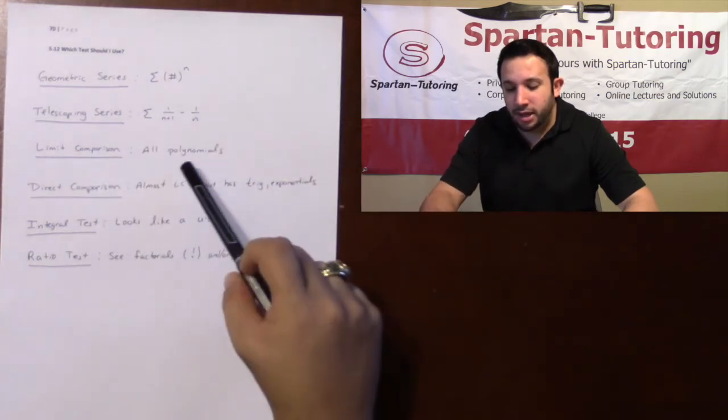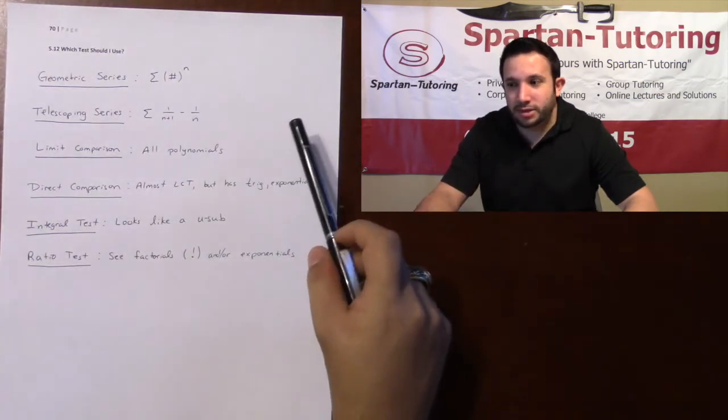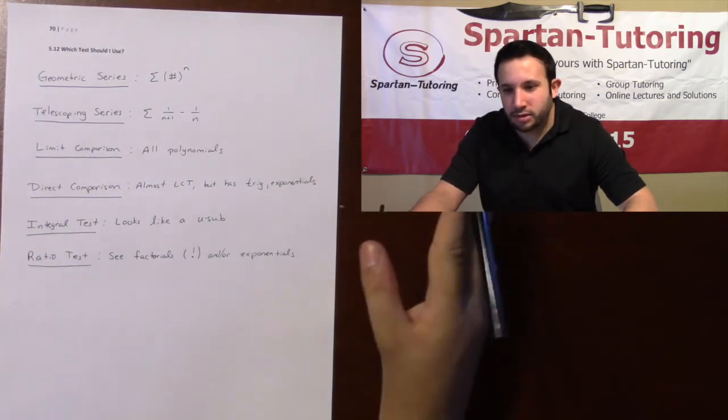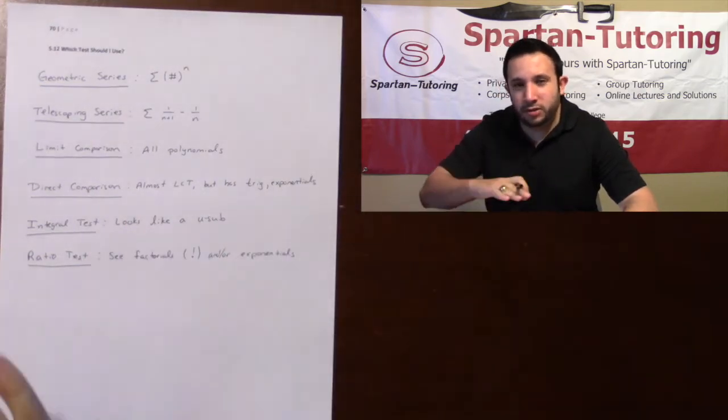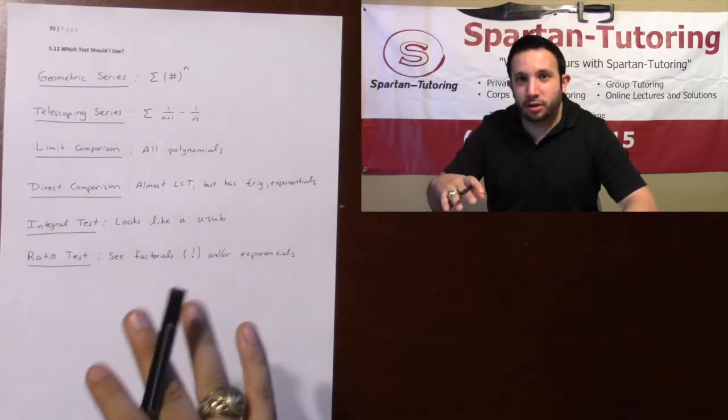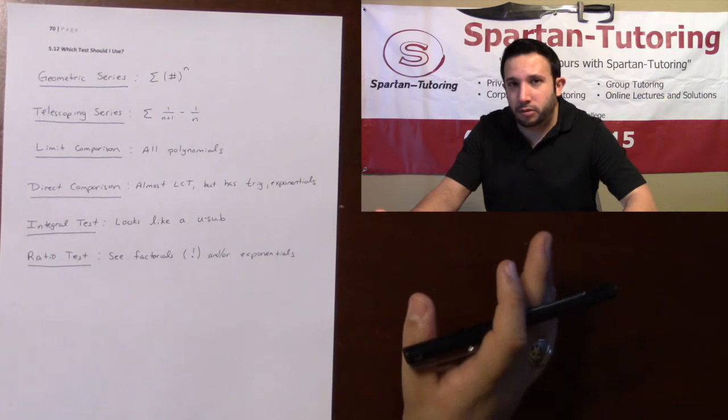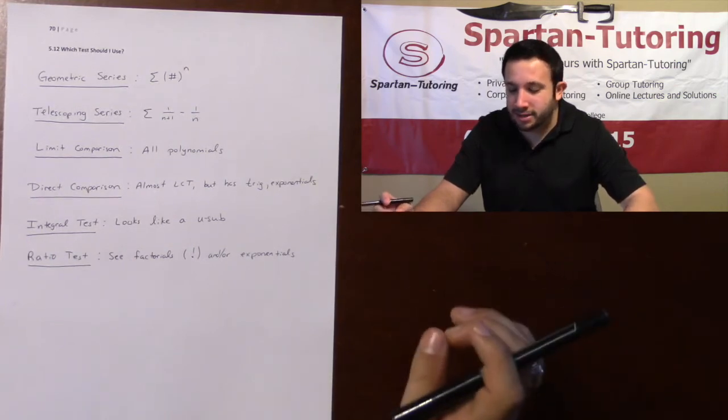Limit comparison, if you have all polynomials, now not necessarily just polynomials, like square root of n's, cube root of n's, those work as well, but whenever you have just n's raised to a number, whenever they're basically, or they literally are all polynomials, that's an instant limit comparison test.